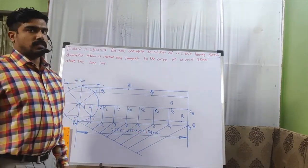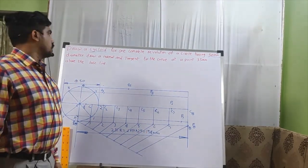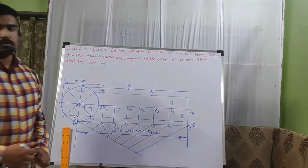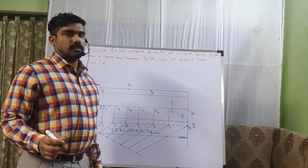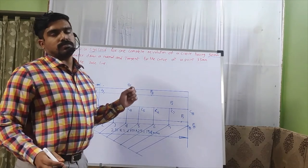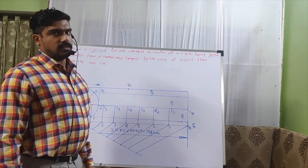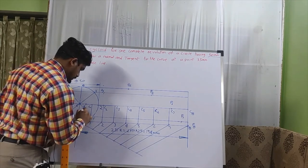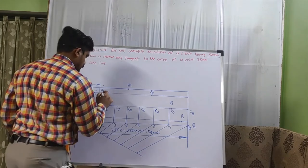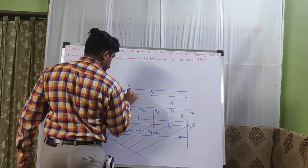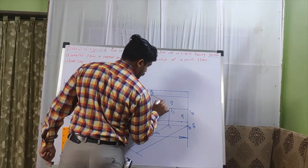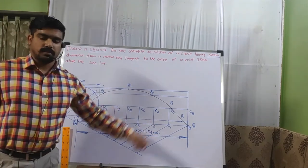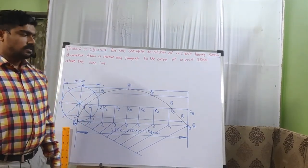Now join all the points P1 through P8 with a smooth curve. Use an H grade pencil to draw this curve — that gives you the cycloid.